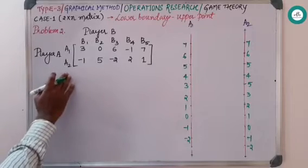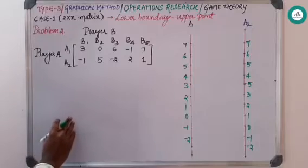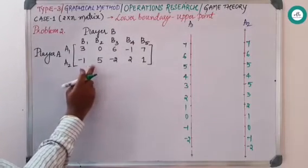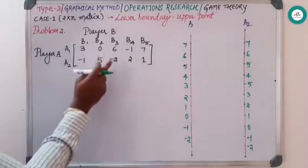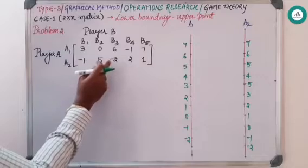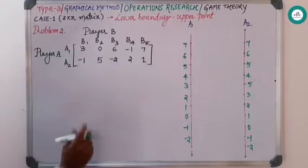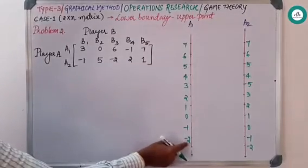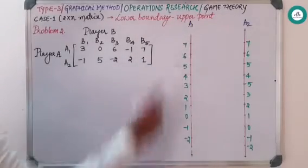Now proceeding with the graphical method. First find out the least value in this given matrix, which gives a starting point for the graph, and the maximum value from the matrix, which gives where you need to stop the graph. Here the least value is minus two, so I have started from minus two from both sides, and the maximum value is seven, so I have stopped at seven.